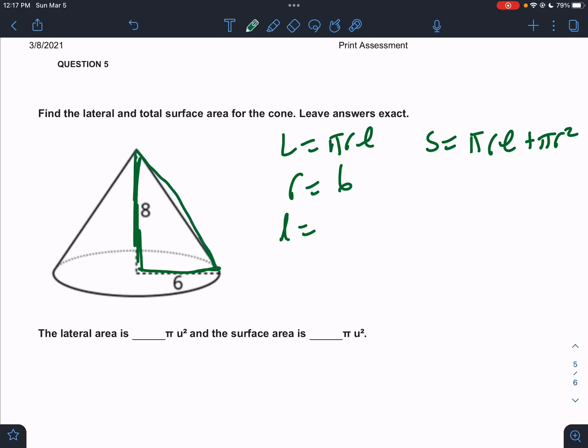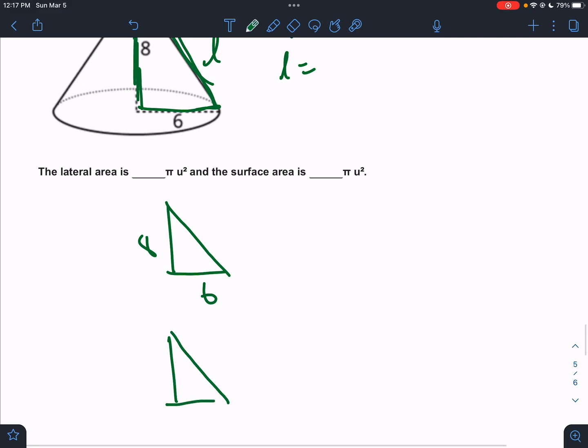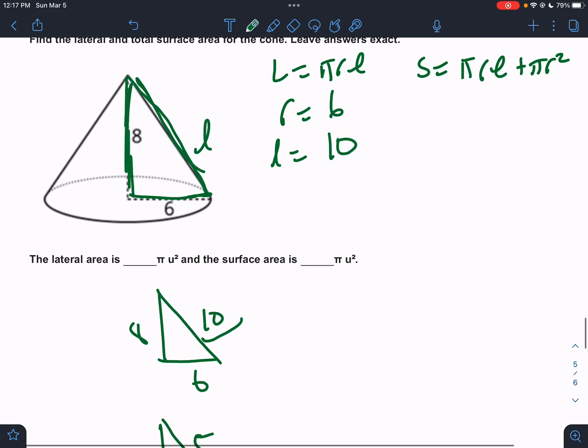l is going to be based off this right triangle. Here's the slant height right there. So if we have a right triangle of 6 and 8, that's a 3, 4, 5 triangle. 3, 4, 5. That's going to be 10. So the slant height is 10.